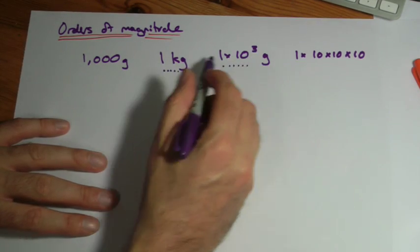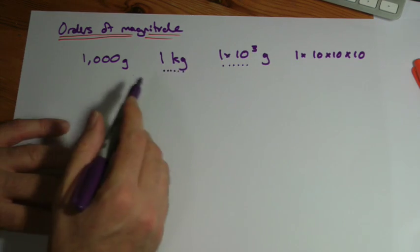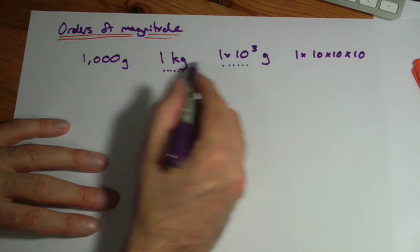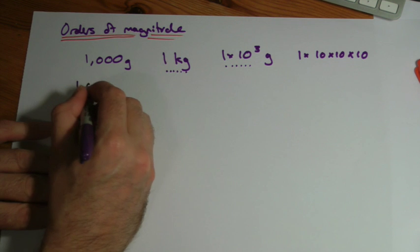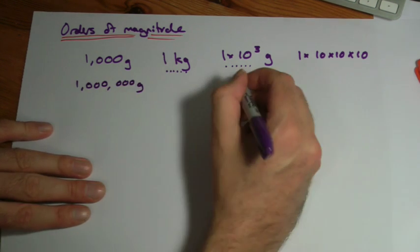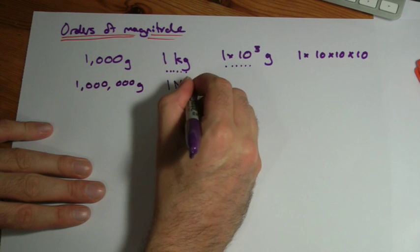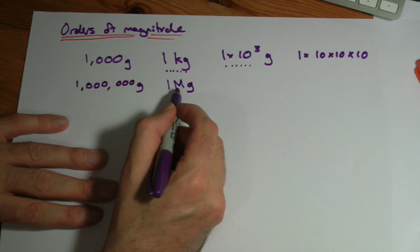Now it turns out that some of these things in standard form do have particular units that go with them, so for example, a thousand is kilo. A million, so if I wrote this with six zeros, I could put a million grams. I could call that a mega gram, capital M for mega. We don't see it very often, but we could do.